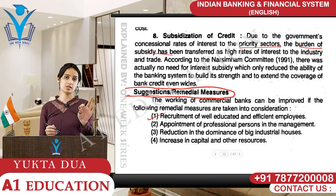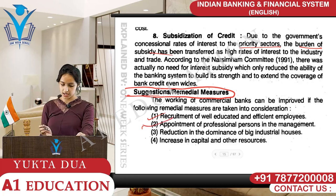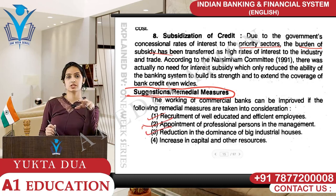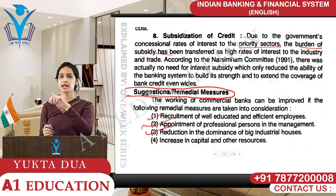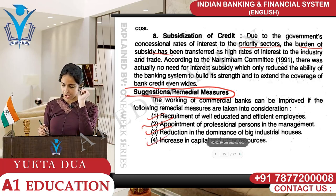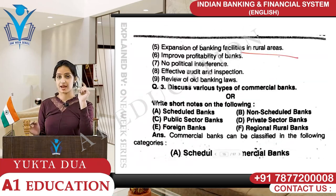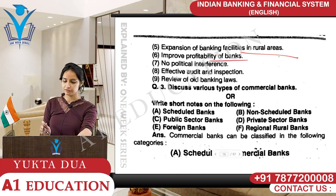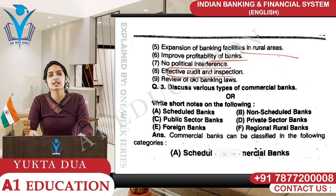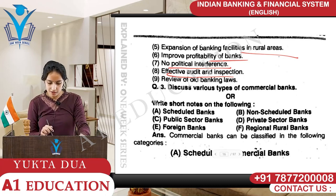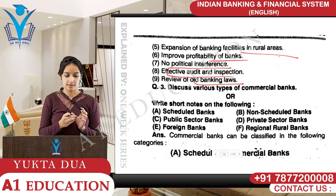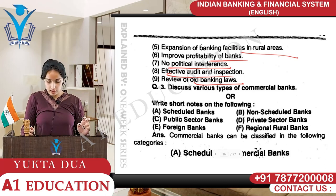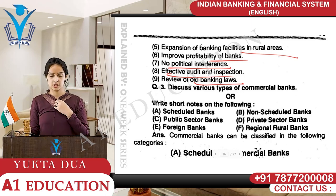Now for suggestions and remedial measures: recruitment of well-educated and efficient employees, appointment of professional persons, reduction in the dominance of big industrial business houses like Tata, Bajaj, and Reliance. There should be an increase in capital and other resources, expansion of banking facilities in rural areas, improved profitability of banks, no political interference, effective audit and inspection to catch any fraud inside the bank, and review of old banking laws. Through all these measures we can improve the progress of the banking industry in India. This was all about question number 2; question number 3 will be covered in the next video.